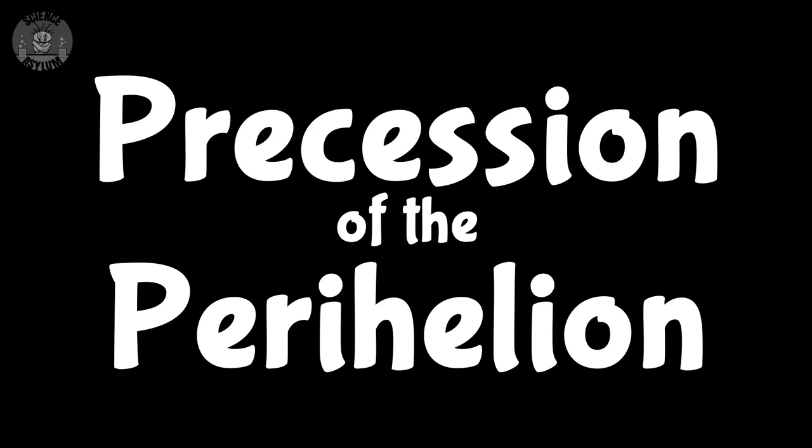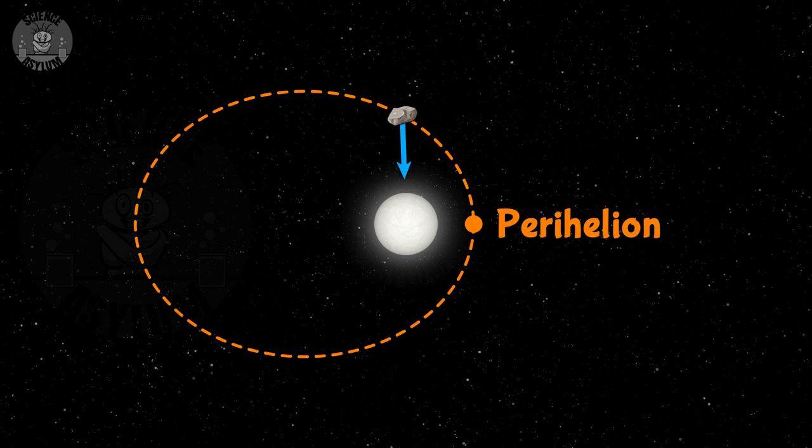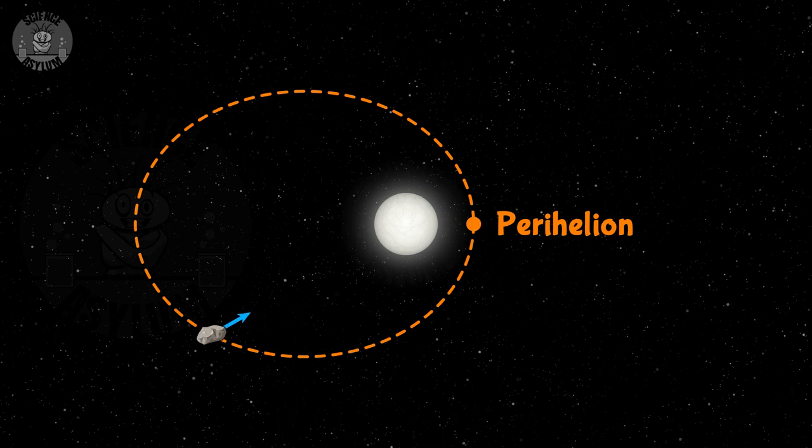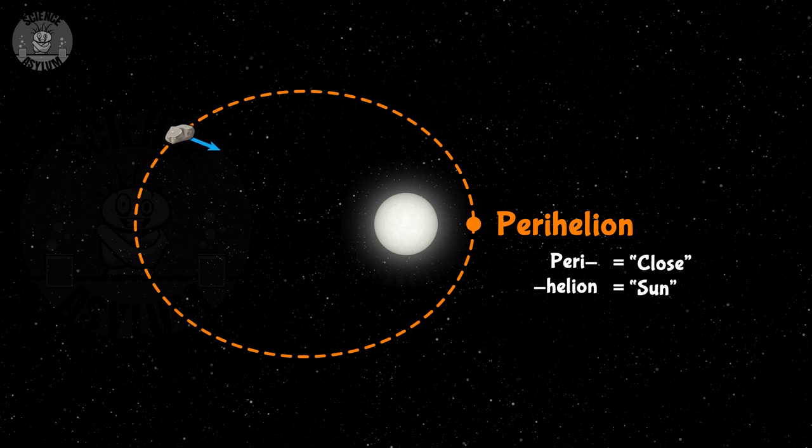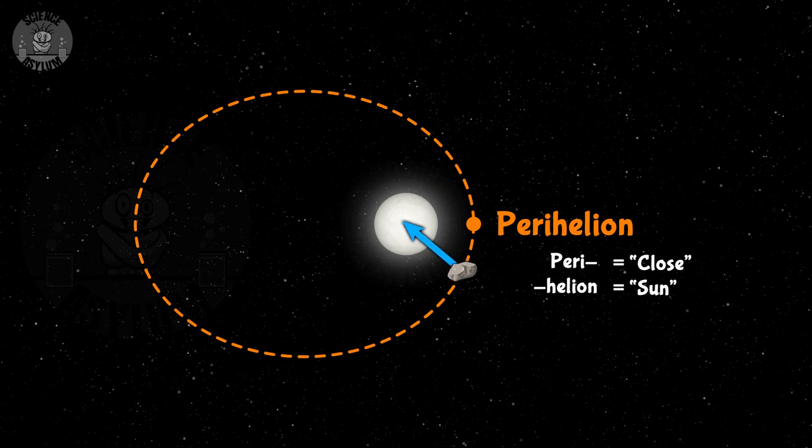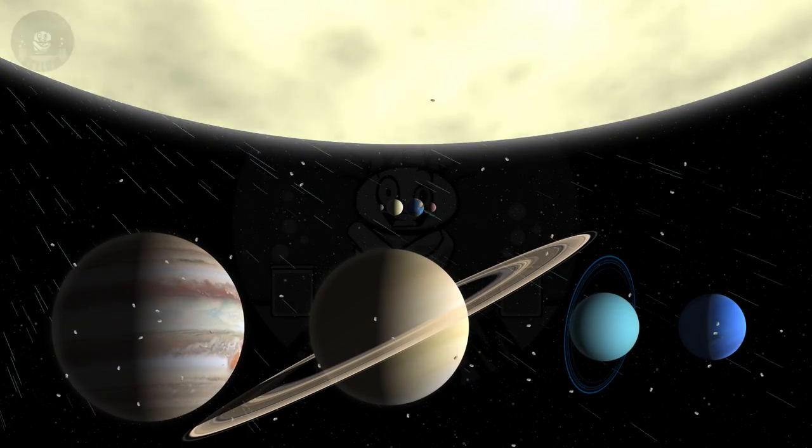But in the long term, we have to make some corrections. The most well-known of those corrections is orbital precession, also known as the precession of the perihelion. In an elliptical orbit, the perihelion is the point where the planet is closest to the Sun. But orbits are only that simple in a two-body problem — the solar system is not a two-body problem. Even though they're really far apart, the planets do tug on each other a little.